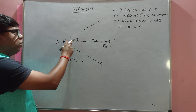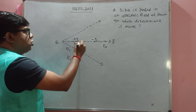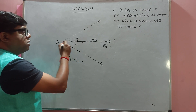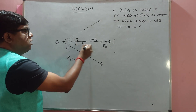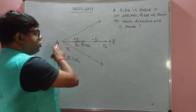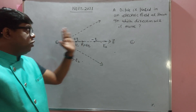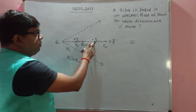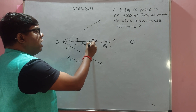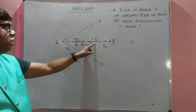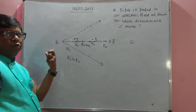The positive charge of the dipole experiences a repulsive force. Since the electric field on the left side is e1, the positive charge experiences a force e1·q towards the right. The negative charge experiences an attractive force towards the left, because the field lines go from positive to negative. So the negative charge tends to move towards left.